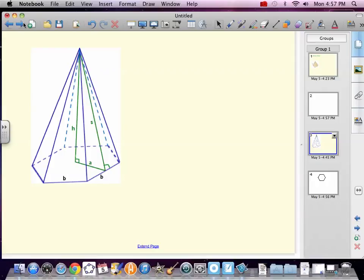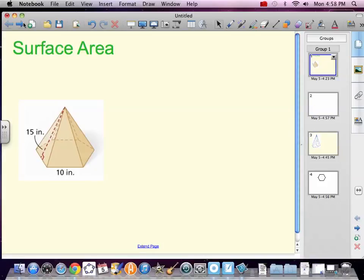Then there's that slant height, that s, that is involved in surface area because it's a part of the triangle that makes up the side. So you know they're not going to give us everything, we're going to have to do some trig, some Pythagorean theorem to find some of the pieces we need.